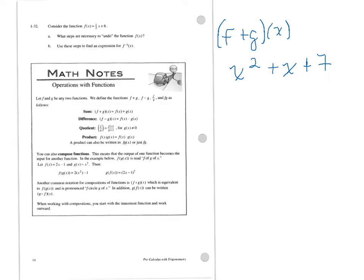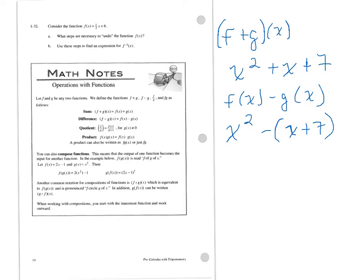Then we might be asked to subtract them using those same two functions. So I might have F of X minus G of X. You'll notice a slight variation in notation: I could have written that as F of X plus G of X, or I can write F plus G of X — they mean the same exact things. This is going to be X squared, and then I subtract G of X, which is X plus 7. Same kind of arithmetic manipulation going on here, and if I want to distribute that negative through, I can.